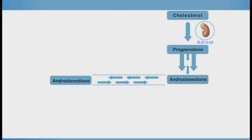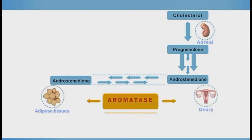Androstenedione is converted to estradiol, the most potent estrogen, by the action of the enzyme aromatase, which is found in the ovaries and adipose tissues.